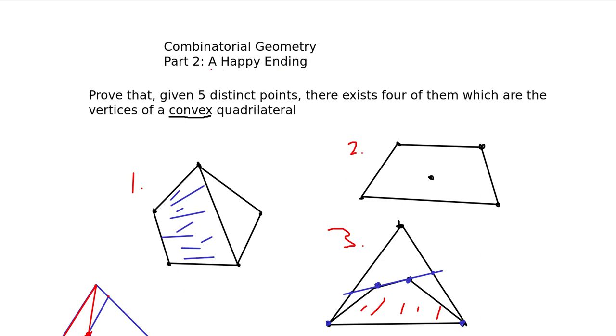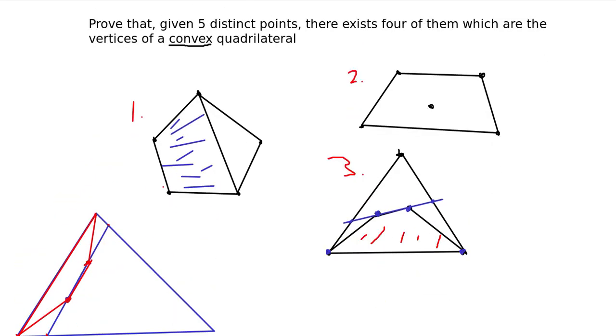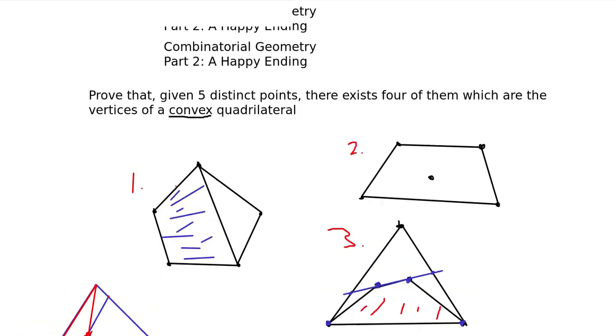It is named happy ending because two mathematicians who worked on this ended up getting married after solving the problem and some of its further generalizations. But I don't remember their names off the top of my head. So anyway, thank you for watching this video and I hope you enjoy my next few videos on combinatorial geometry.